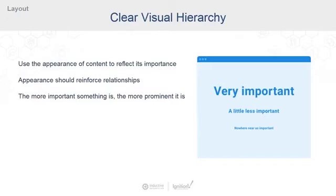First up is clear visual hierarchy. This means making sure that the appearance of your content clearly reflects its importance. The most important thing on a screen should be called out in some way — maybe making it larger or louder. You can use tools like color, white space, bolding the text, or some combination of these things to make that happen.